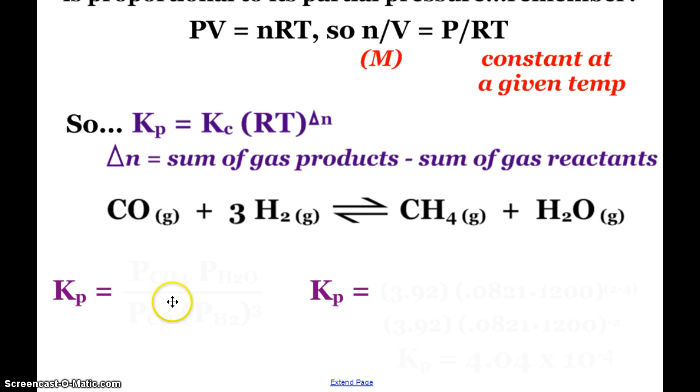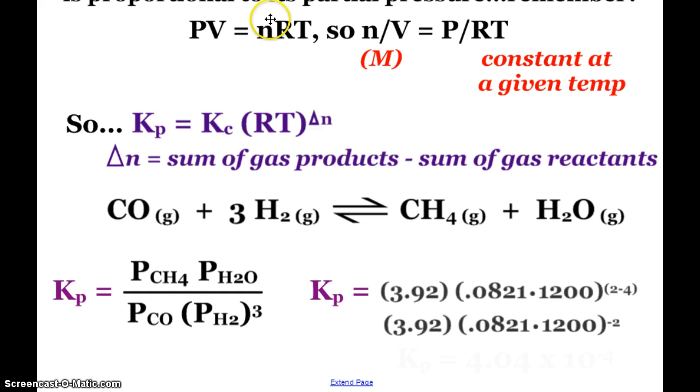Here's that same equation. If they ask me to write the Kp expression, it's the same thing except using partial pressures instead of concentration. And you can see that. Now to calculate it, if they didn't give you the partial pressures, you can plug and chug to that equation. From previous slides, we found that the Kc is 3.92. It was at 1200 Kelvin.